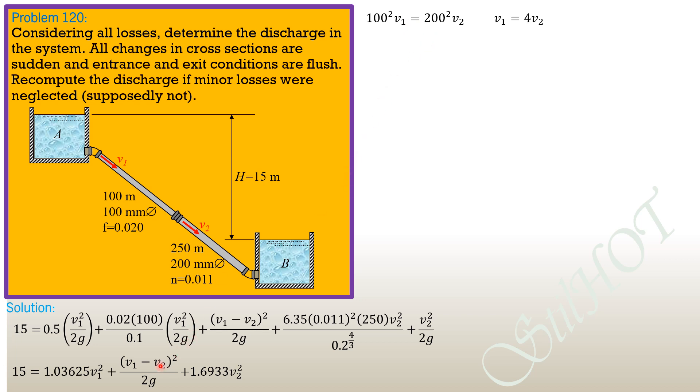Substitute here. So 15 equals 1.03625 times 4 times V2, so V2 square plus quantity 4V2 minus V2 quantity square over 2G or 19.62 plus 1.6933 V2 square. So combining like terms, 15 equals 18.732 V2 square.